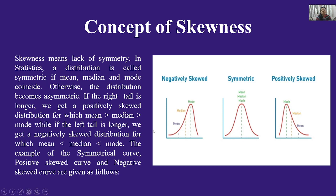जब positively skewed distribution होता है, तो mode से बड़ा median होता है और median से बड़ा mean होता है। उसी तरह से जब left tail longer होती है तो इसका उल्टा हो जाता है — mean से बड़ा median है और median से बड़ा mode है। यह भी पूछा जा सकता है कि जब mode से बड़ा median और median से बड़ा mean हो, तो वो कौन सी दशा है। क्योंकि NPC में mean = median = mode होता है।